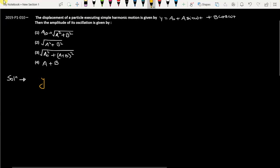We have the equation y which is equal to a₀ plus a sin ωt plus b cos ωt. So we can say this is y minus a₀, because a₀ is a pure number so we can subtract it, and it is a sin ωt plus b cos ωt.